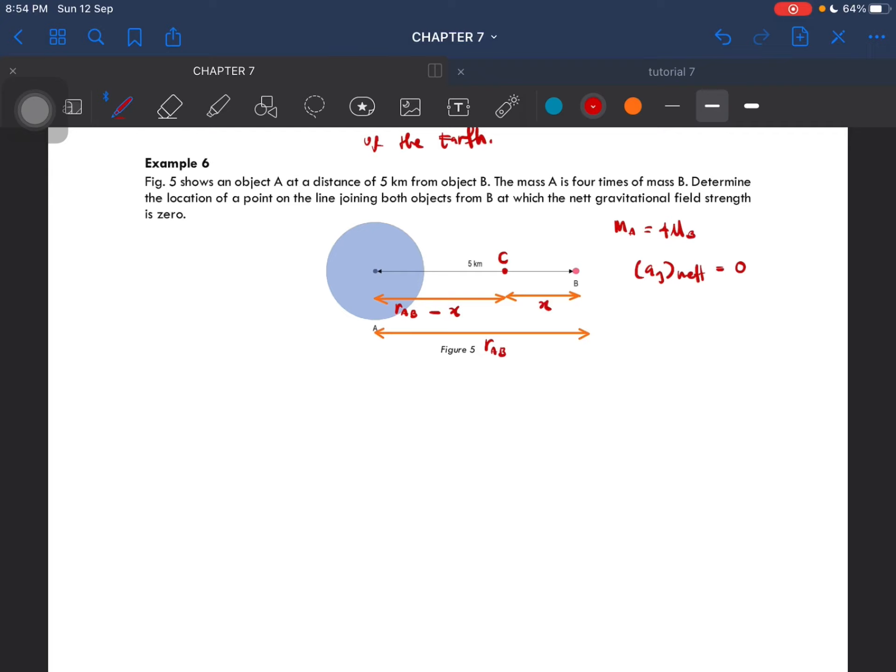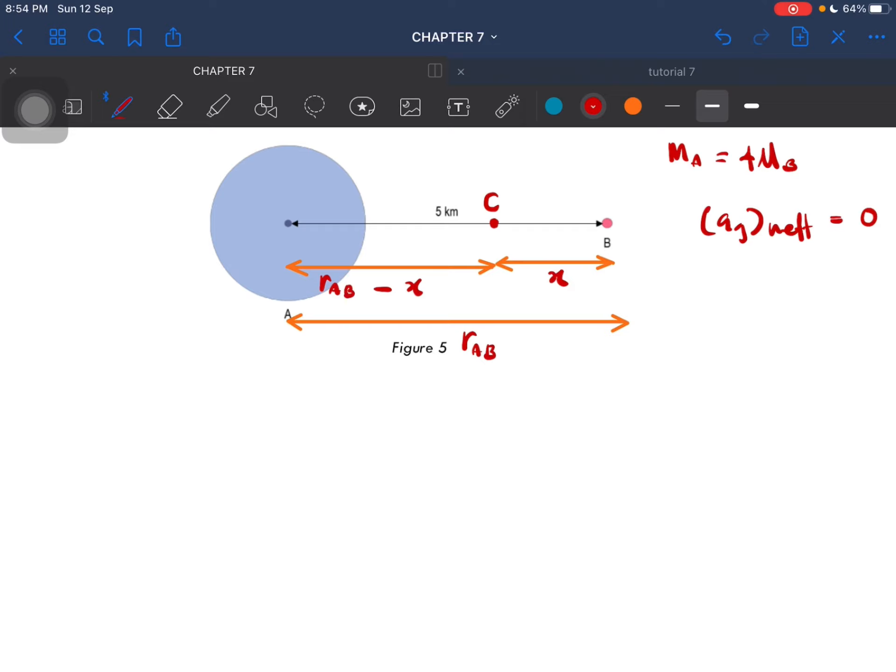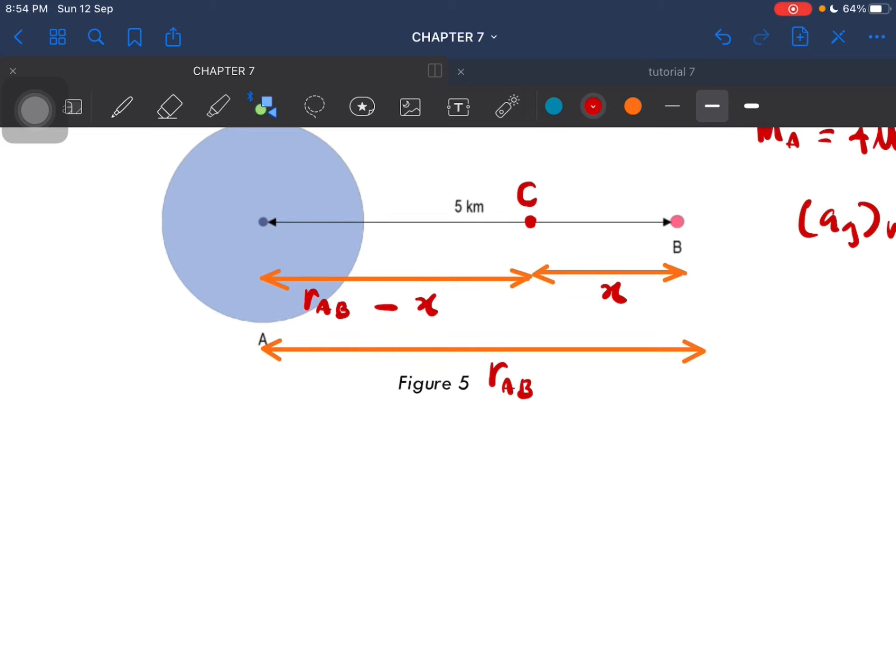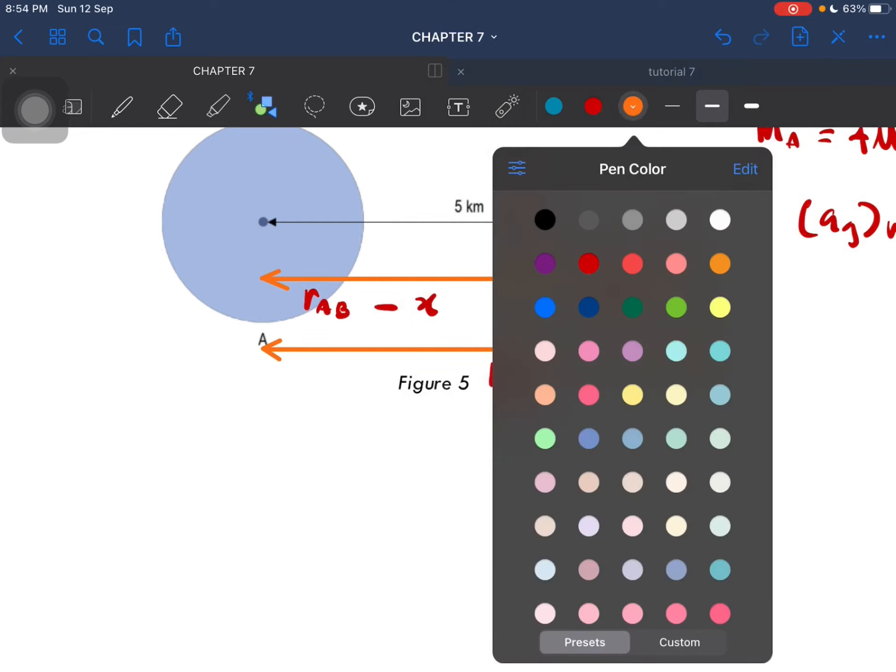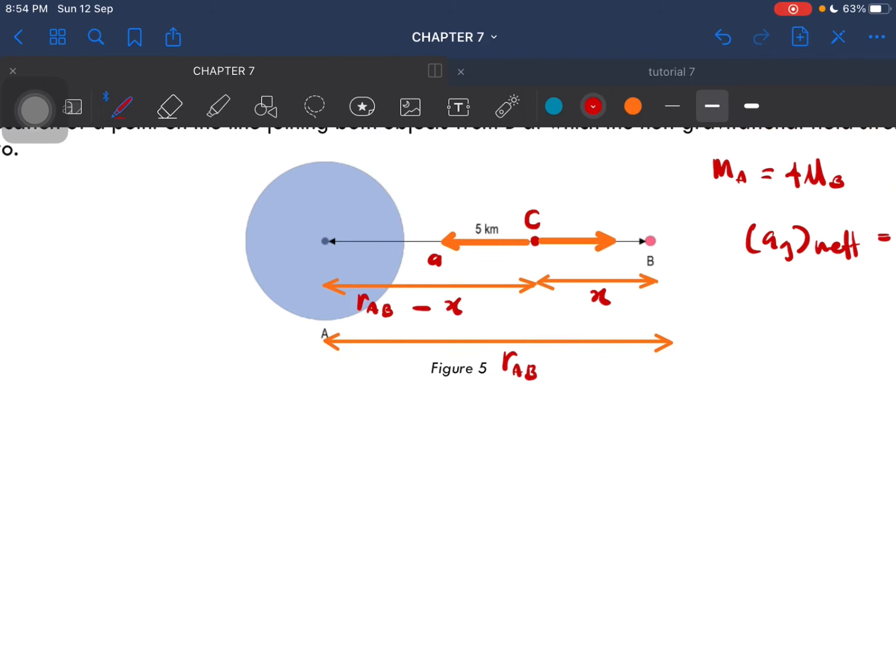Now we are gonna draw the arrows. So now we are going to draw the arrow at point C. We have this gravitational acceleration from mass A with mass B. So this is g_A, this is g_B.